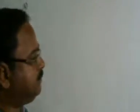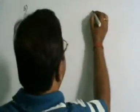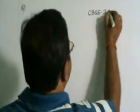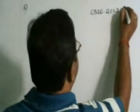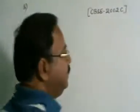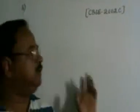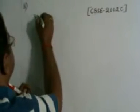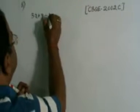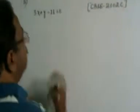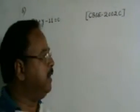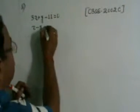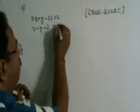This problem has been asked in CBSE 2002 compartmental. You write: solve the following system of linear equations graphically. 3x plus y minus 11 is equal to 0, and x minus y minus 1 is equal to 0.